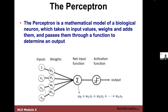The perceptron became both a mathematical and a computational model of a neuron. You have inputs x0, x1, x2, x3 and weights w0, w1, w2. You have an input function that sums them, then an activation function — which could be a step function or a sigmoidal function — and then you have an output.